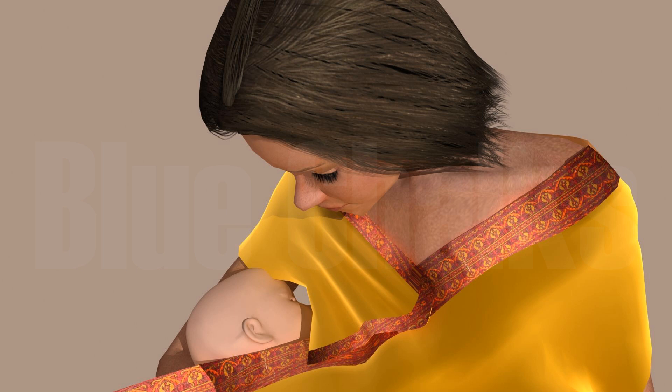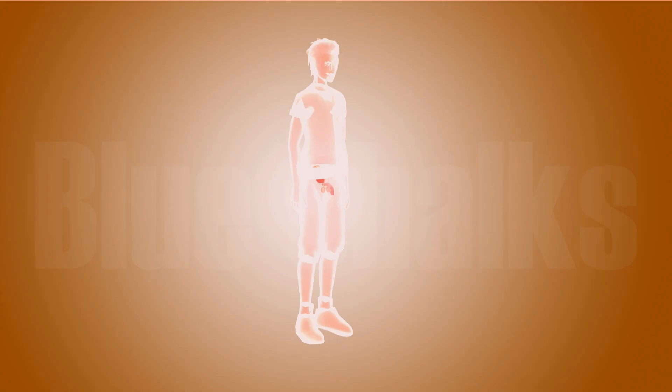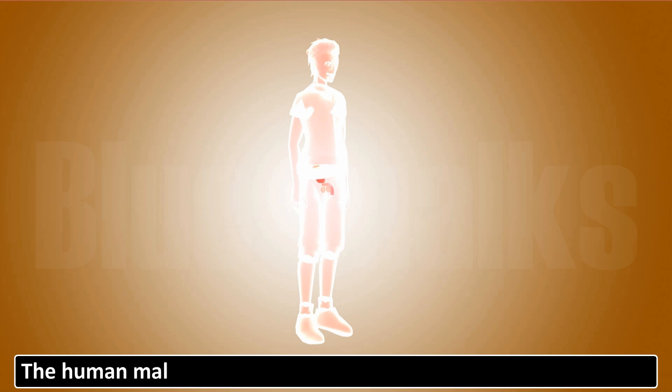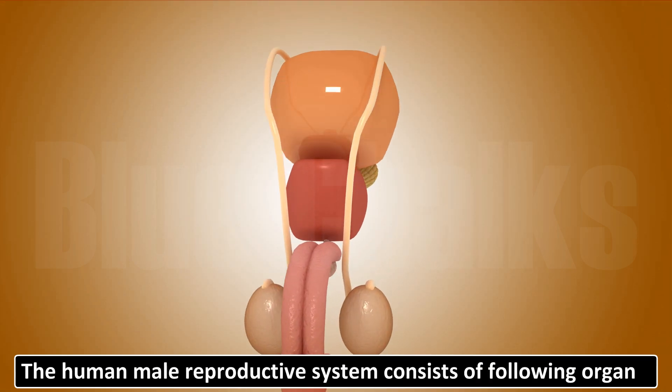Now let us study the systems involved in the process of sexual reproduction. First we will study the organs of the male reproductive system in detail. The human male reproductive system contains the following organs.